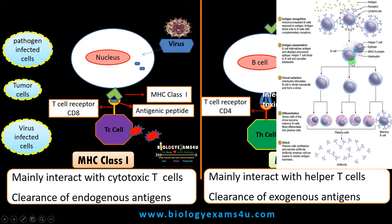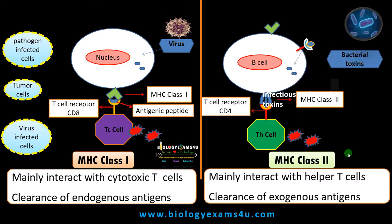The selected B cell is induced to divide and then differentiates to form plasma cells and memory cells. Plasma cells are responsible for producing antibodies with that particular specificity, which bind to the toxins causing agglutination and neutralization, thereby clearing the toxins from the system. This is what normally happens with the activation of T helper cells by antigen presenting cells like B cells, dendritic cells, and macrophages.